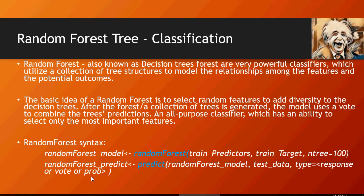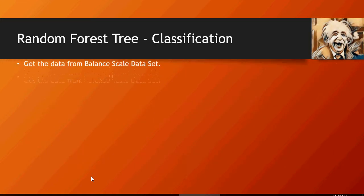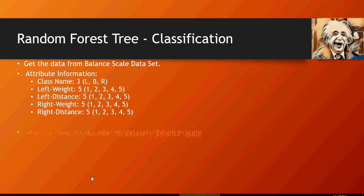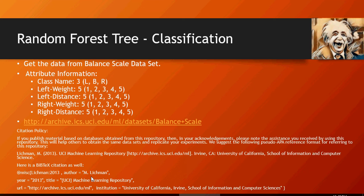So we are going to use the same balance scale dataset, which we used for tree C5.0. And you know about these attribute information. And you have s, l, b, r, left weight, distance, right weight, and distance. And this is the citation for the dataset.